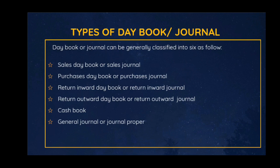The cash book is used to record cash transactions — when the business receives cash from customers it is entered into the cash book, and when they make cash payments they enter it into the cash book as well. The general journal is used to record all transactions that cannot be recorded in the other books mentioned above. Remember, if a business deals only in cash transactions, it may only need the cash book, but any business that deals with credit transactions will surely need all the day books explained.